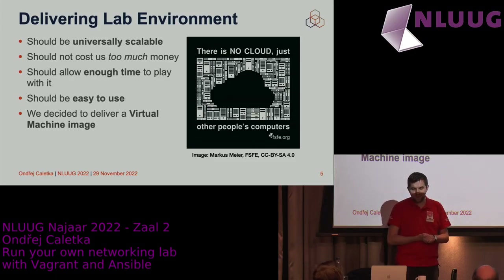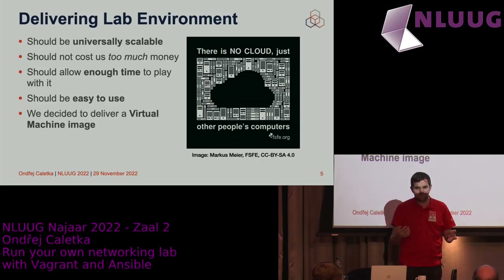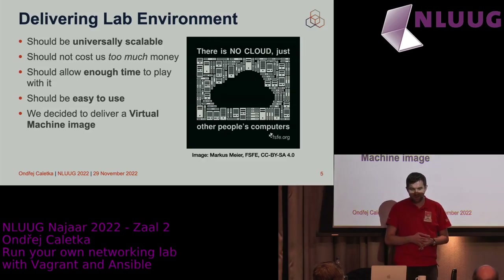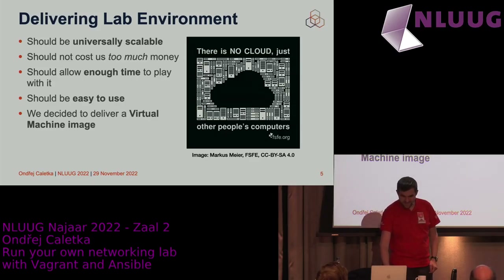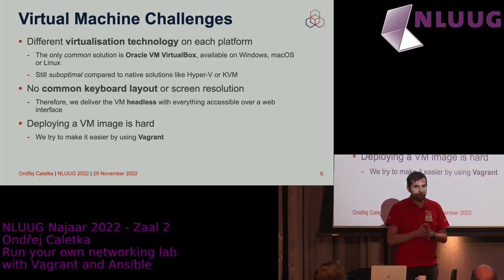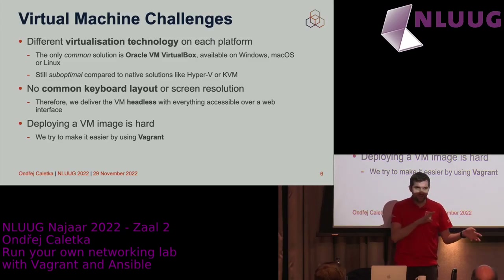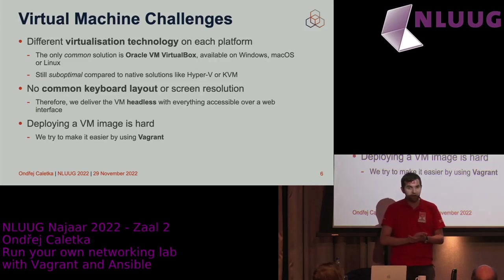We started with the approach of delivering a virtual machine image. Computers are now pretty capable — you can run a VM on a decent five-year-old computer easily. The nice thing about running things on users' computers is unlimited scalability: the more users you have, the more hardware you have to run it on. The drawback is there are three major desktop operating systems — Windows, Linux, and Mac OS — each taking a different virtualization approach.